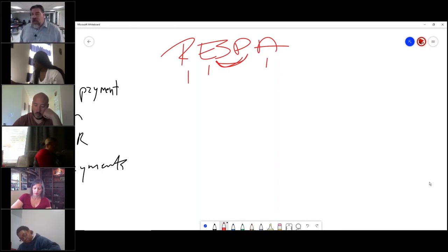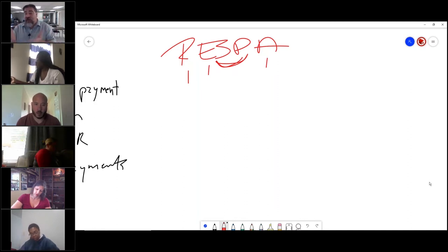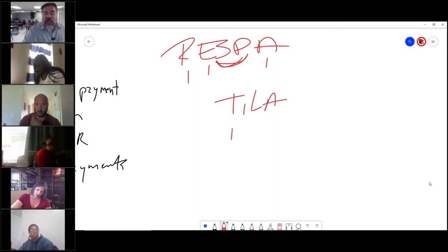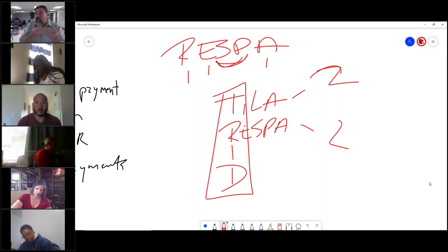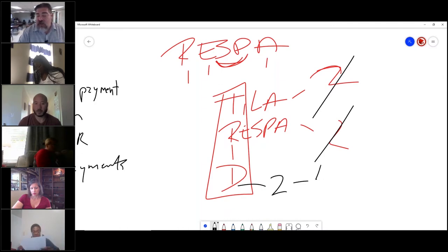We integrated these two: Truth in Lending and RESPA. We said this has two forms, this has two forms - seems like a lot of forms. So we're going to integrate this disclosure and now we have this thing called TRID, which combines the Truth in Lending and the RESPA and takes these two forms. Now we only have two combined: we have the loan estimate form and we've got the closing disclosure form.